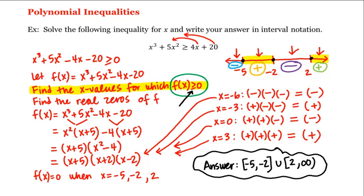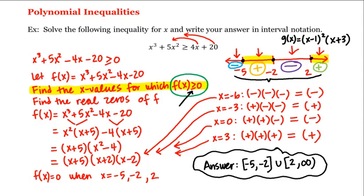It should be pointed out that this alternating behavior — minus, plus, minus, plus — does not always hold when solving polynomial inequalities. For example, with the polynomial g of x equal to x minus 1 squared times x plus 3, this alternating behavior would not occur between its consecutive real zeros — you should verify that yourself. Okay, this is how we solve polynomial inequalities.